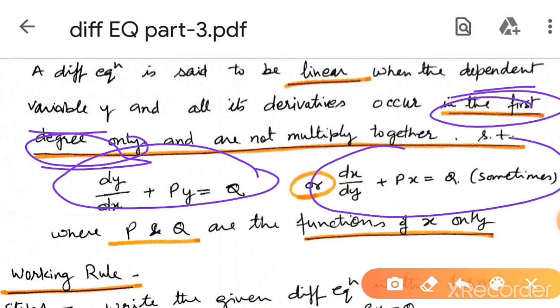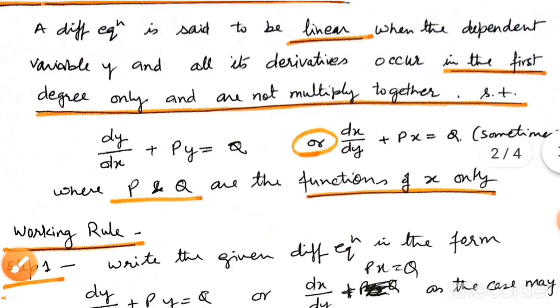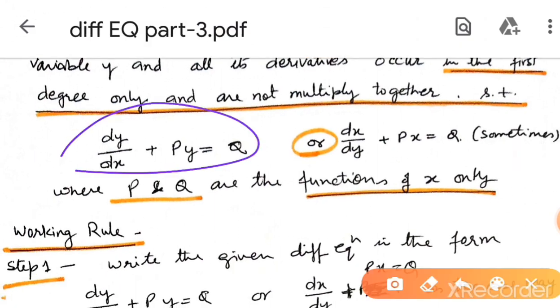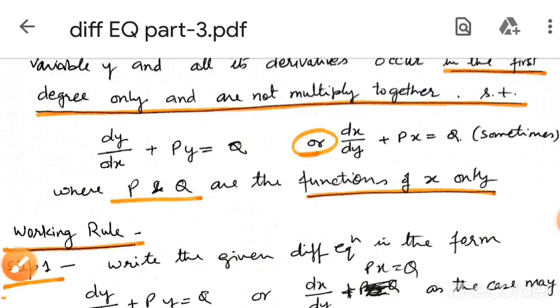If we take x as the dependent variable, the equation becomes dx over dy plus p x equal to q. Sometimes this case is used. Generally our equations come in this form, where p and q are the function of x only.